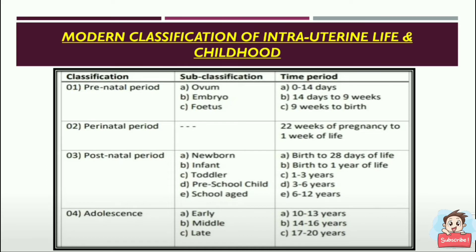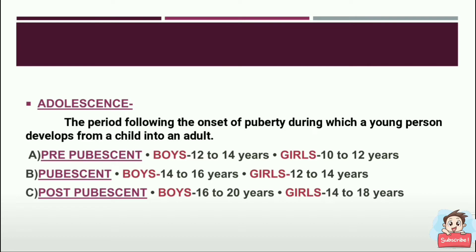Regarding adolescence, it is the period following the onset of puberty during which the young person develops from a child into an adult. Pre-pubescent: boys 12–14 years, girls 10–12 years. Pubescent: boys 14–16 years, girls 12–14 years. Post-pubescent: boys 16–20 years, girls 14–18 years.